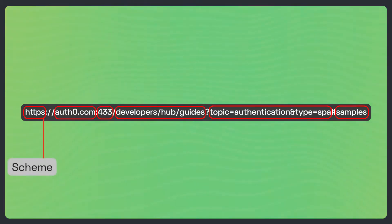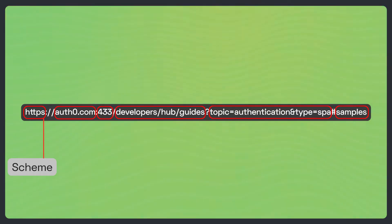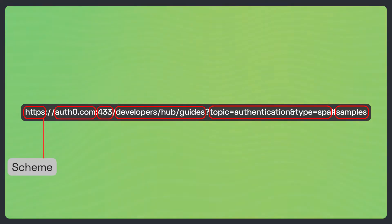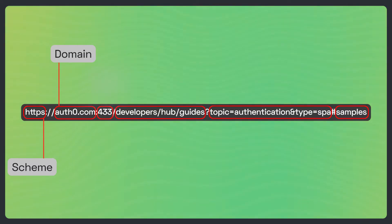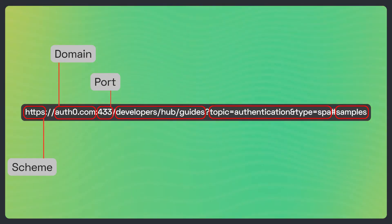A URL consists of a few parts. The scheme — in a URL, this is the protocol that should be used to access the resource. Beyond the well-known HTTP and HTTPS, you may use other schemes like FTP, SMTP, and so on. The domain is the part that indicates the server hosting the resource; it can be a domain name or an IP address. The port is the protocol port to send requests to in order to access the resource — usually it is omitted, meaning the default protocol port should be used.